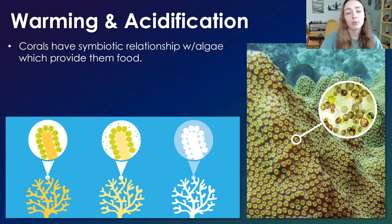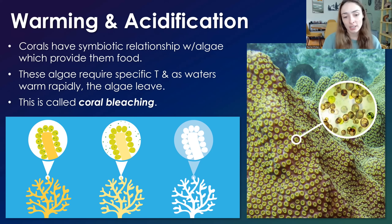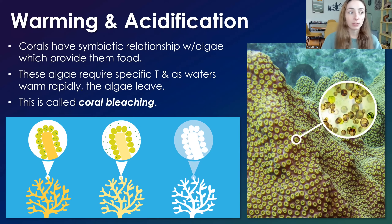Corals have a symbiotic relationship with algae that live in their polyps and help provide them food, and these algae require very specific temperature ranges. As water warms rapidly, the algae basically leave. That's really not great for the coral because it becomes bleached. Bleached corals are not necessarily dead, but there's a very small chance they will ever live again — the algae would have to come back, and unless the water went back to the temperature range they like, they're not coming back.